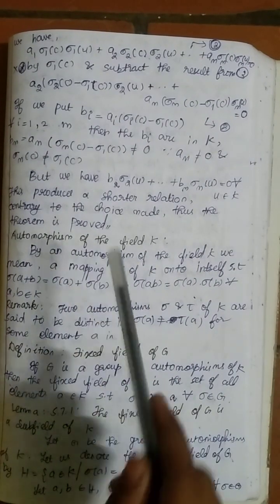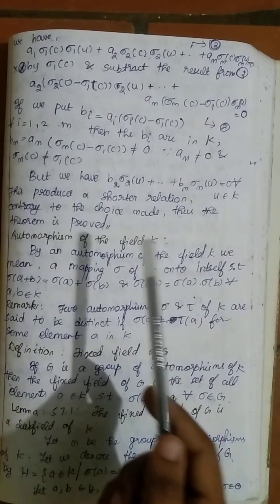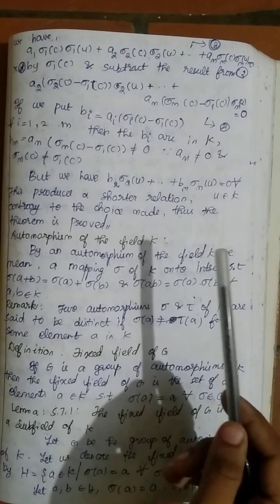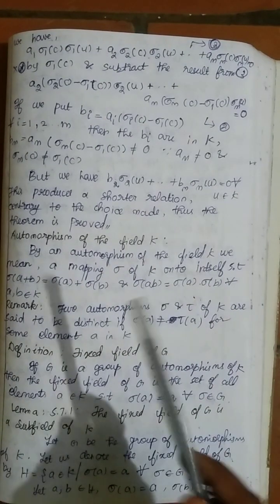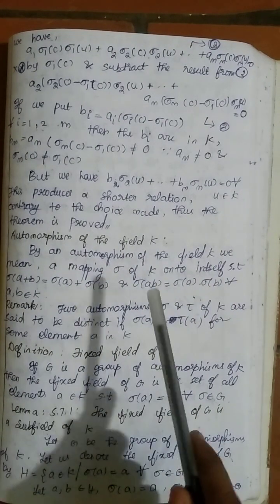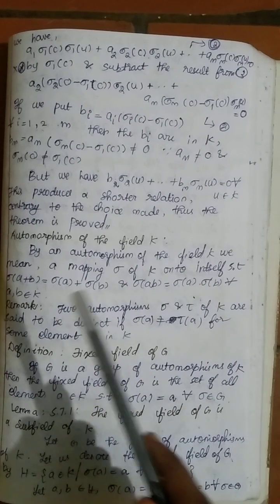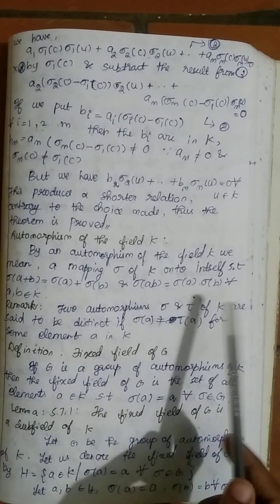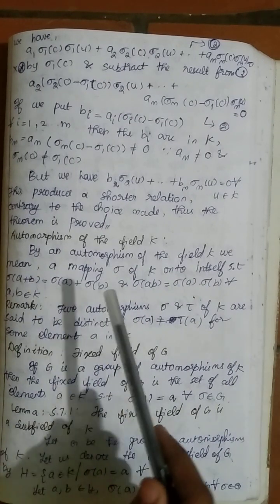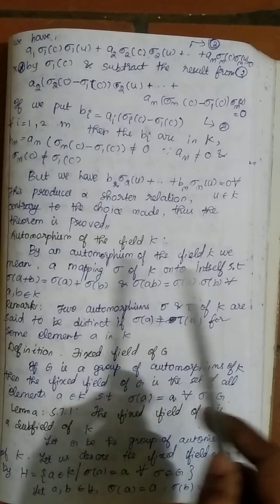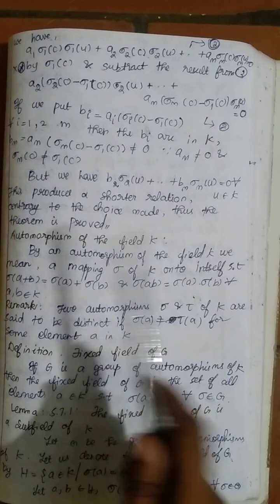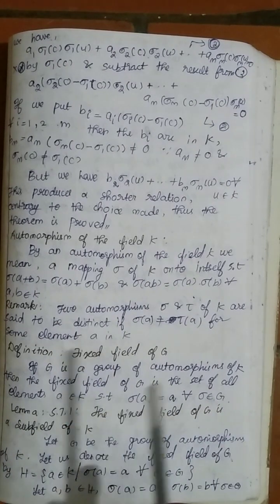Therefore, what we conclude is that it is impossible to find elements a1, a2, ..., an — not all zero — in k such that a1·sigma_1(u) + a2·sigma_2(u) + ... + an·sigma_n(u) = 0 for all u belonging to k. This completes the proof.